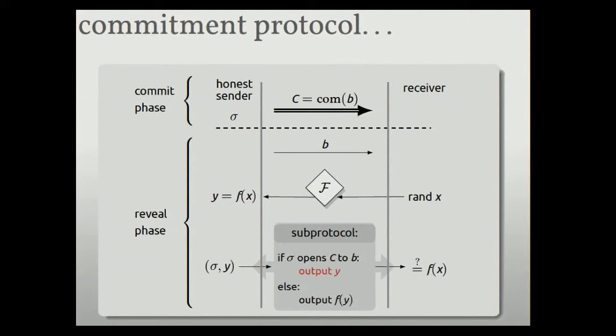The second branch of the if statement is not used in the normal course of things. So the honest sender, he's honest, so he can indeed open the commitment to the value that he's claiming. So the honest sender always activates this red line. So the thing that the receiver sees at the end is always f of x. So that's just what the protocol says. The receiver is going to check, did I get back f of x from this sub protocol? So the receiver is happy.